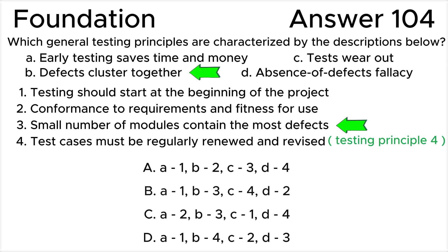Statement 3: Small number of modules contain the most defects, corresponds to the testing principle 4, Defects Cluster Together. This principle highlights the observation that defects are not uniformly distributed. Rather, a small number of modules typically contain the majority of defects, according to the Pareto principle.